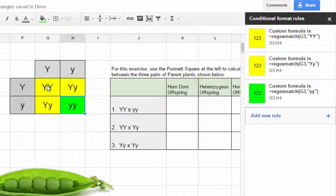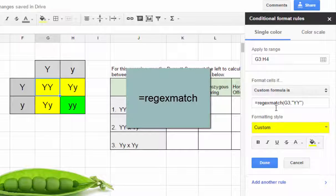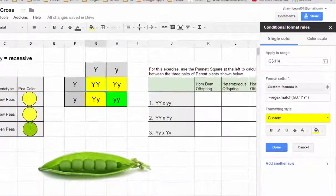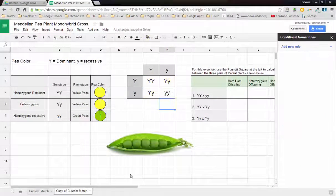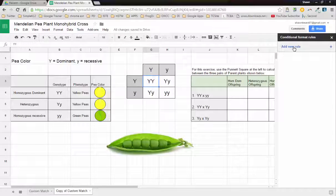If you look at these cells of our Punnett square, if we look at our conditional formatting, what I did is I used a regular expression match, meaning that it is looking for the expression of a capital or a lowercase letter in this situation. Let me show you how to do this over on the other page. I'm going to format this one and I'm going to click add new rule.